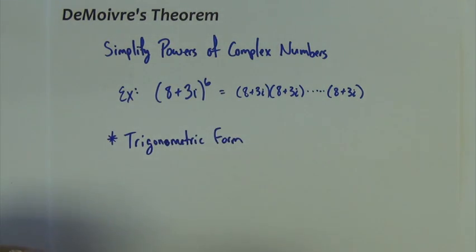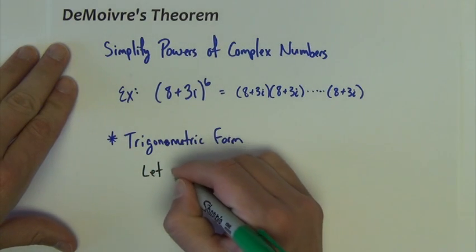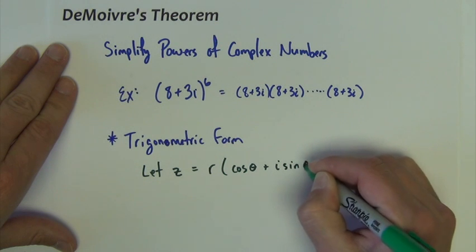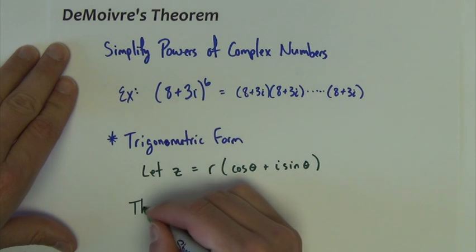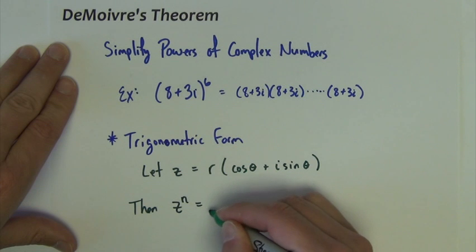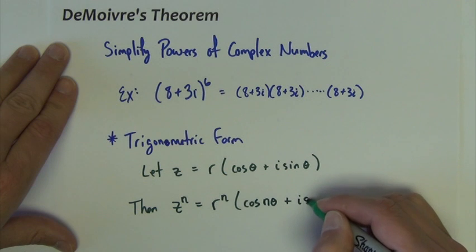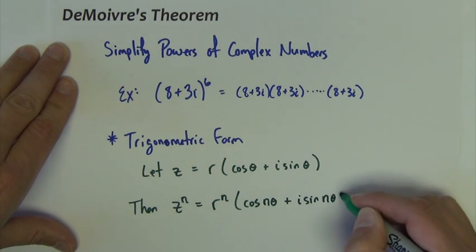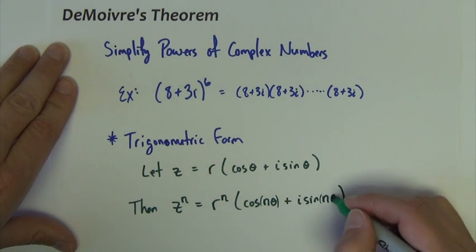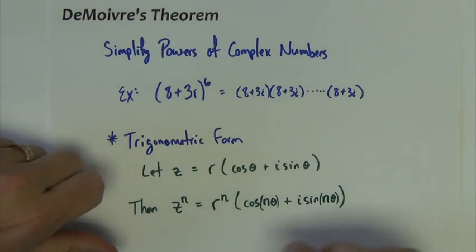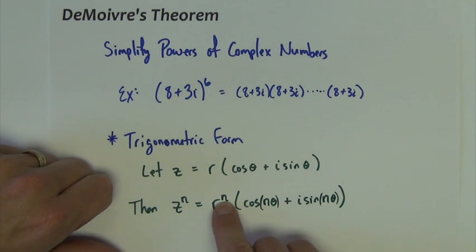De Moivre's theorem looks like this: if we let z equal r(cosine θ + i sine θ) — the standard trig form of a complex number — then z to the n power equals r to the n power times (cosine(nθ) + i sine(nθ)). The r value gets the exponent applied as an exponent, and the theta value gets the exponent as a scalar multiplier.